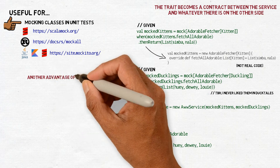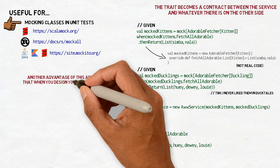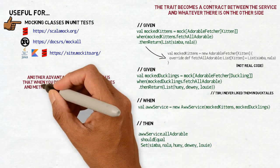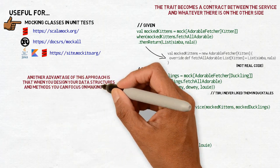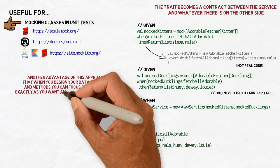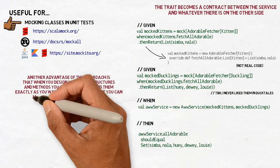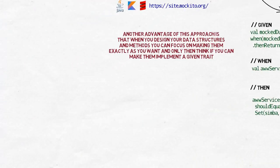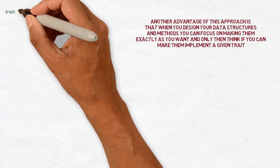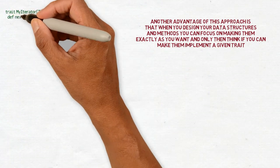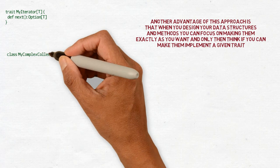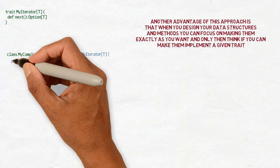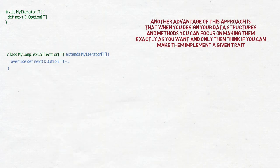Another advantage of this approach is that when you first sit down and design your data structures and methods working on them, you can focus on making them exactly as you want and only then think if you can make them implement a given trait. If doing that is not trivial, you can decide either you can change something in the code you have just written, or maybe there is another way. For example, maybe you can provide a method that will create an instance of another class from the one you have, and that new class will be able to implement the trait. Think of a collection and an iterator.